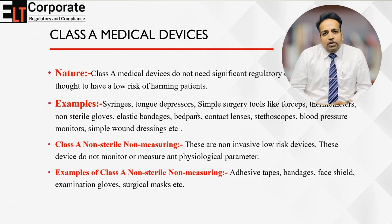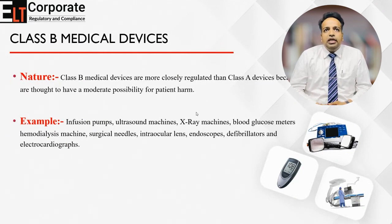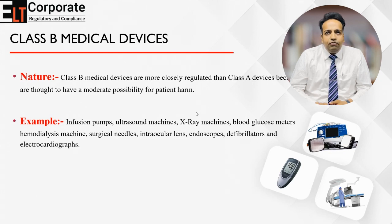Class B devices are those which have a moderate possibility of harming patients. Examples of Class B can be X-ray machines, ultrasound machines, infusion pumps, intraocular lenses, endoscopes, defibrillators, electrocardiographs, etc.